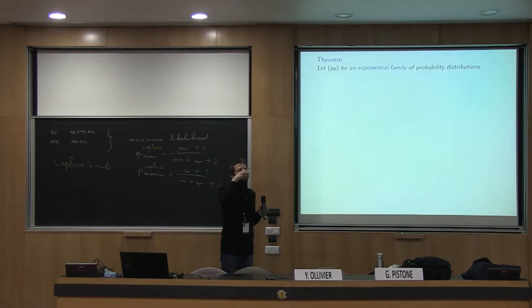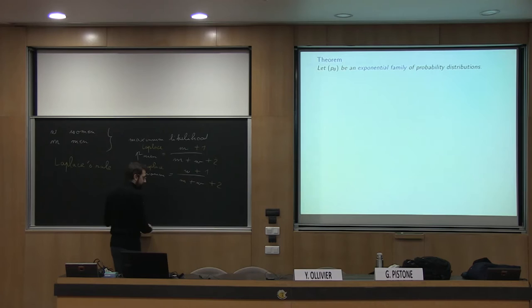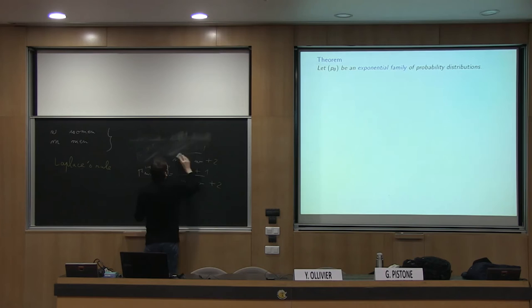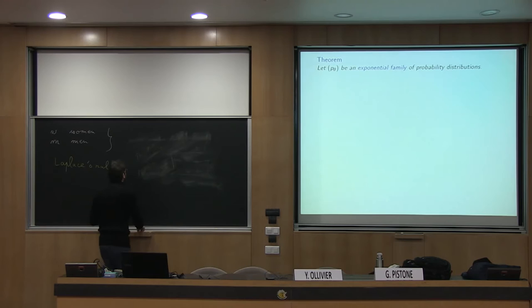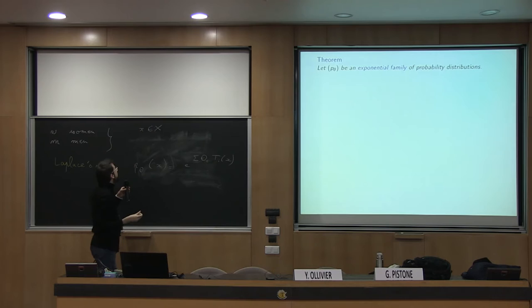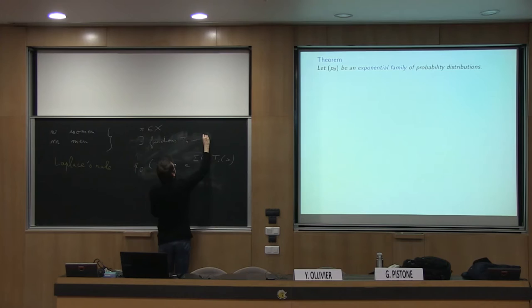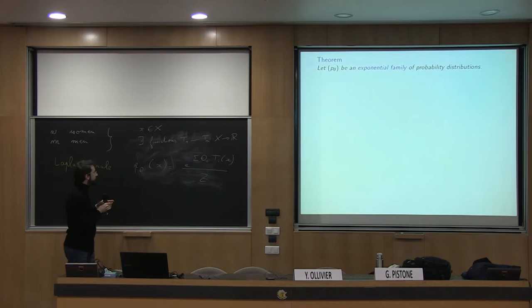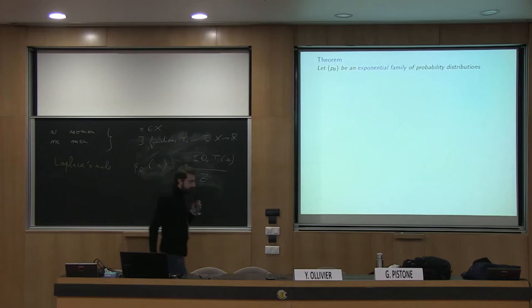An exponential family means your probabilistic model is of the form p_theta(x) proportional to exp(sum over i of theta_i * t_i(x)). You have predictions to be made in an arbitrary space X, with functions t_1 through t_n from X to R. You have an exponential family if your probability distribution for x with parameter theta_i is proportional to these Boltzmann-like distributions.